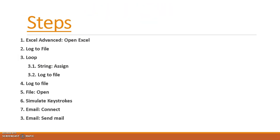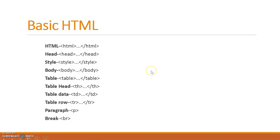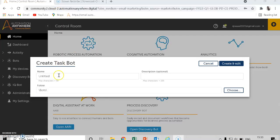The steps involved in creating the bot are: first, open the Excel file; then log to file — open and enter the text logs to the .txt notepad; start the loop for each row in Excel; then string assign, log to file inside the loop, and outer loop log to file; then file open, simulate keystrokes, connect the email, and send the email. Let's move on and create a new bot for the dynamic HTML table.